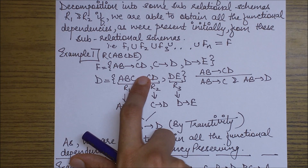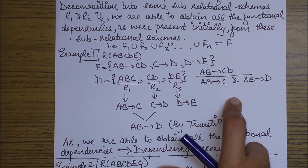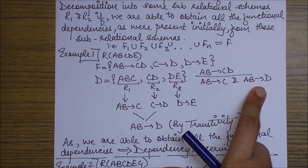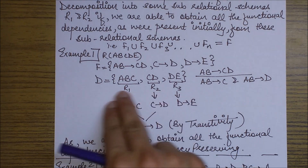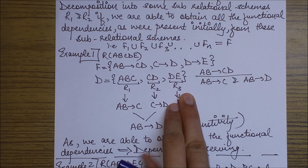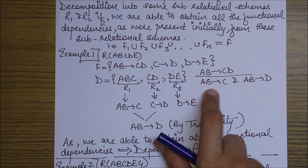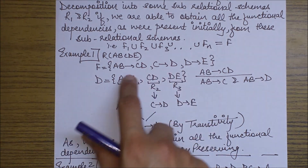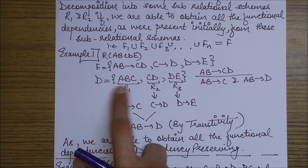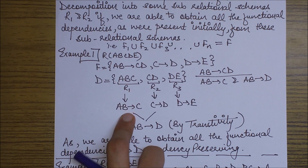This can be split by using the splitting property and written as AB goes to C and AB goes to D. Now I am going to check what functional dependencies I can derive from these relational schemas and verify they are all present in set F. First, I check AB goes to C — I can see from the first sub-relational schema R1 I can easily derive AB goes to C.